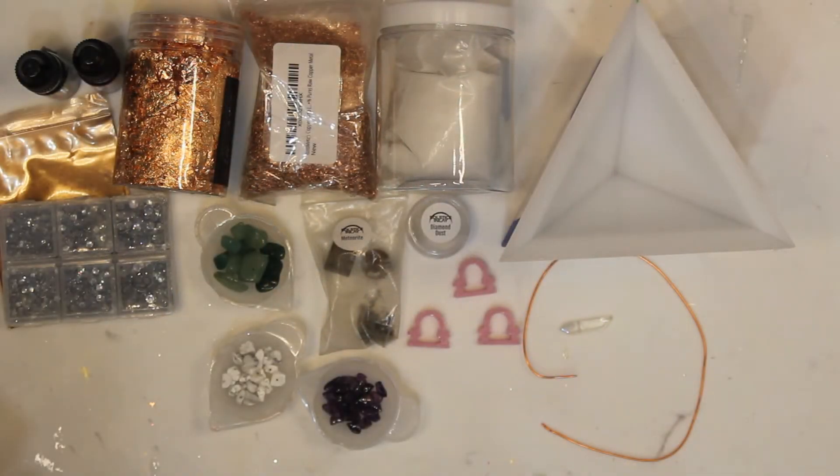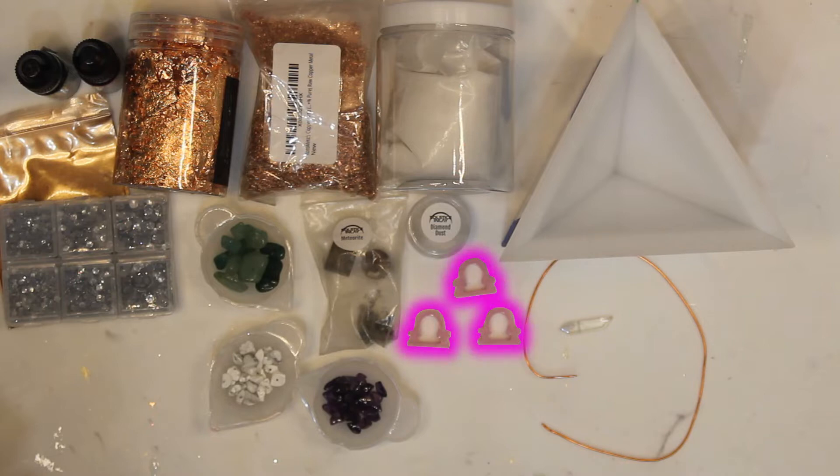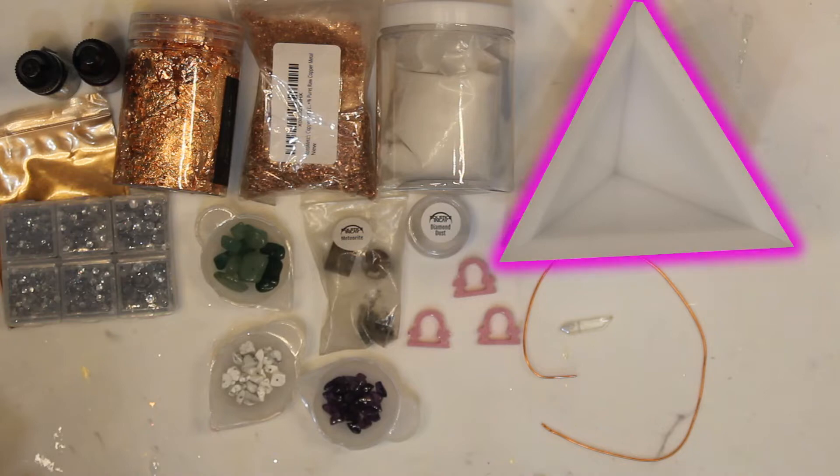We honor the archetype of Libra with the following organic and inorganic materials: meteorite, diamond dust, copper foil, elemental copper nuggets, white howlite, green aventurine, amethyst, white sand, clear quartz crystal, copper wire, epoxy, cast symbols of Libra, rhinestones, and the tetrahedron mold.